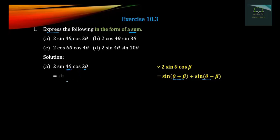Sine bounding: sine 4 theta plus 2 theta, plus sine 4 theta minus 2 theta, gives us sine 6 theta plus sine 2 theta. Both sine bounding terms are the same.